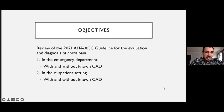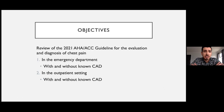Objectives for today: as previously mentioned, this is a review of the fairly new guidelines that have been released — the 2021 AHA-ACC guidelines for the evaluation and diagnosis of chest pain. I will be focusing on patients with acute chest pain presenting in the emergency department with and without known CAD and how we should be managing these patients, and also in the outpatient setting for folks who have known and unknown history of CAD.